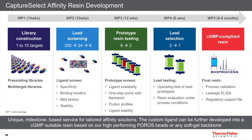If you cannot find a suitable solution in the market and would like an affinity solution enabling robust platform purification, we can develop a custom CaptureSelect resin for you. The workflow consists of five work packages: library construction in E. coli, high-throughput screening for specificity, elution conditions to save your product of interest, and ligand stability for resin reuse. Once we have the top four to six candidates, sequences are expressed in yeast and scale-up studies performed. In Work Package 4, the prototypes are tested by the customer using real-life feed stream and process conditions, and the final candidate is selected.